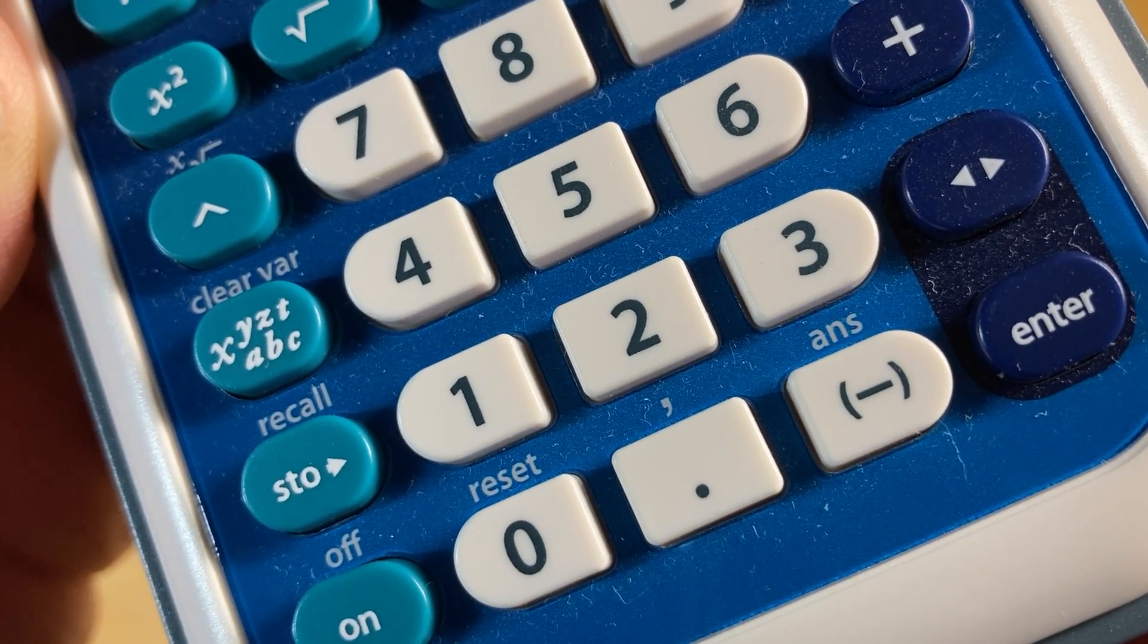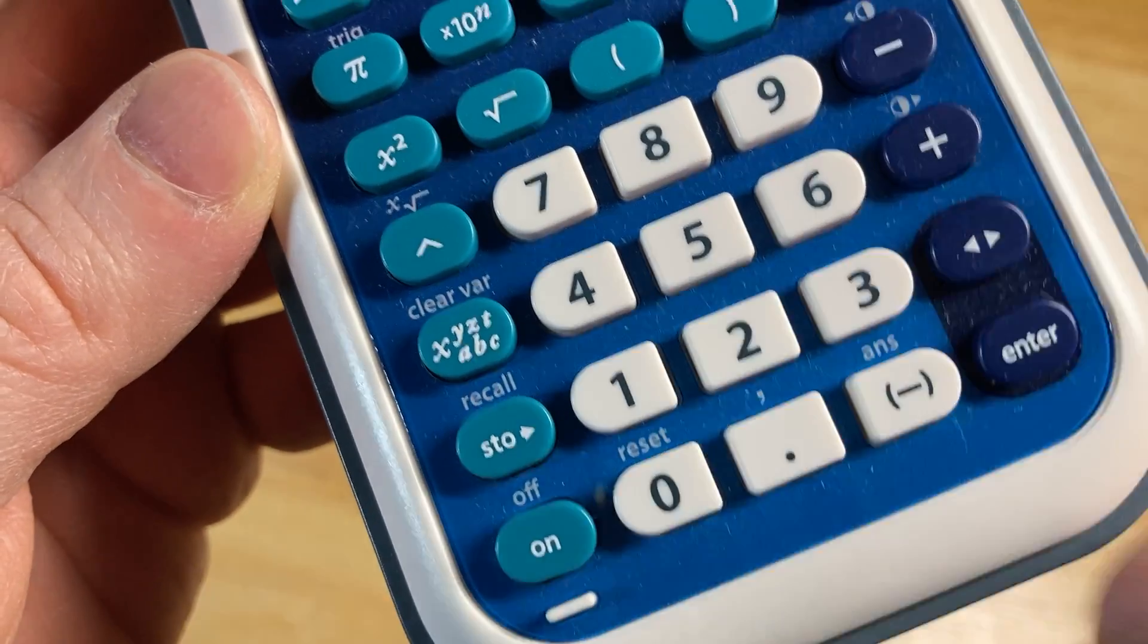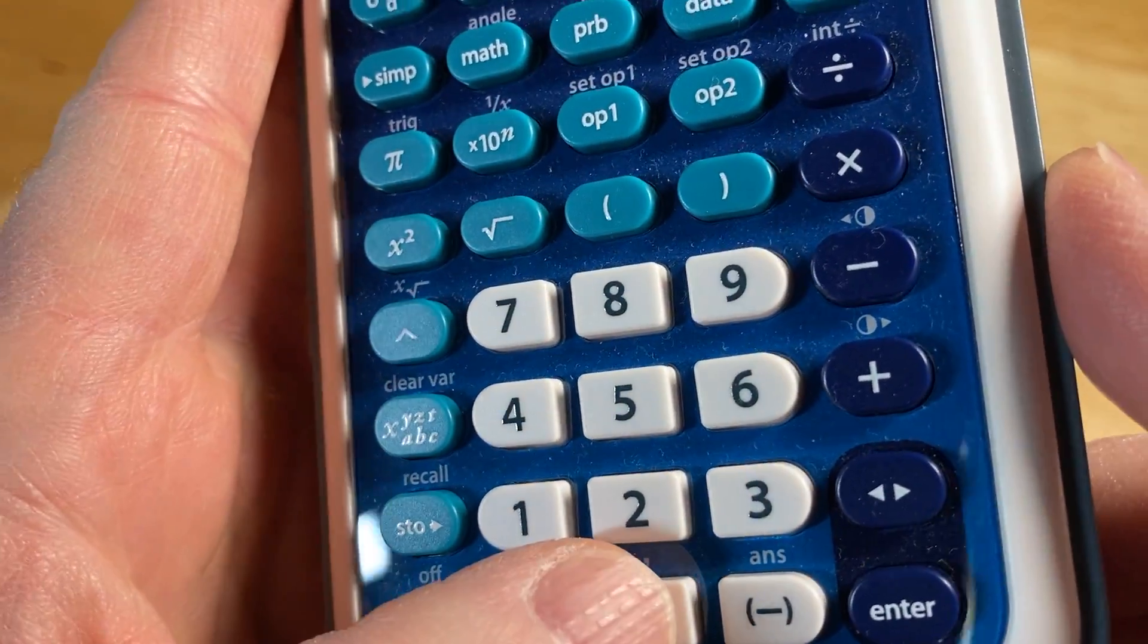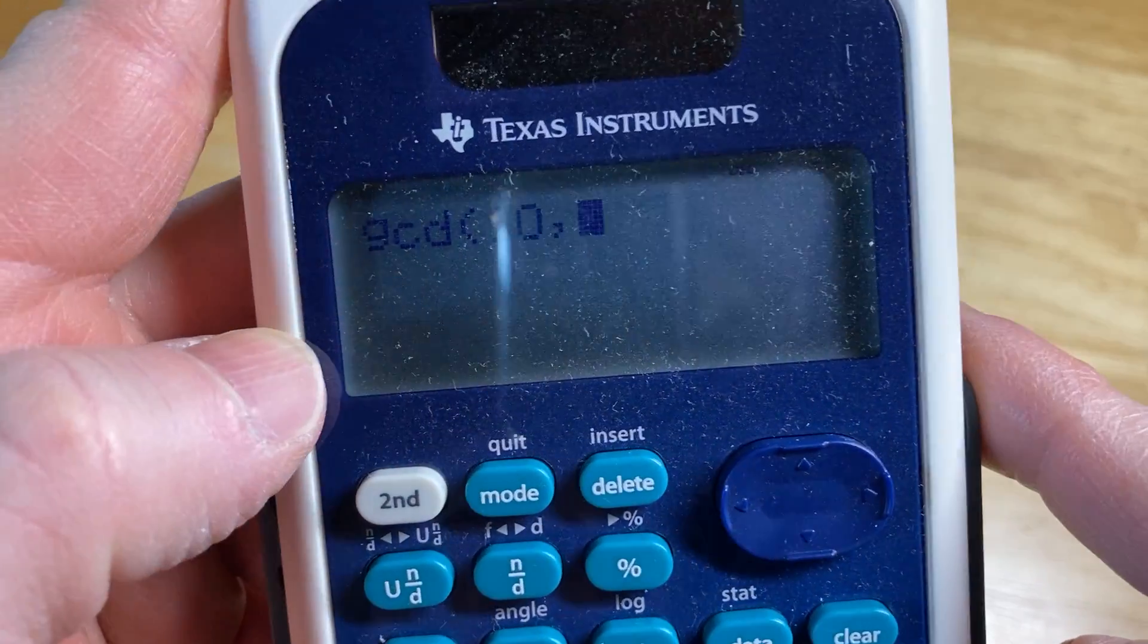But it's a white key, so you have to hit the second key first before you press this. So I'm going to press 2nd, and then I'm going to come over here and press the comma key, and see it shows up here now.